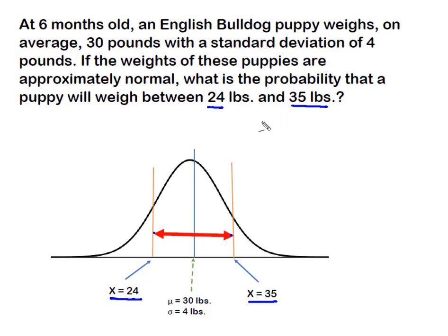So our first step was to convert both of these to z-scores. So my first z is going to be 24 minus 30 divided by the standard deviation of 4 pounds, which is going to give me a negative z-score of 1.50. And then up here on the top, my other z is going to be 35 minus the mean of 30 divided by that standard deviation of 4, which is going to give me a positive z-score of 1.25.